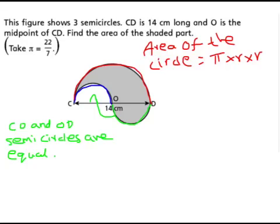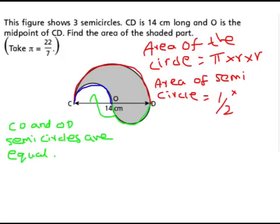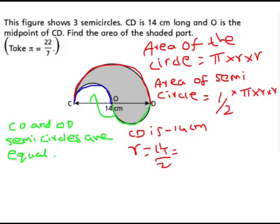So in this sum, CD is 14 centimeters, so r would be 14 divided by 2, which is 7 centimeters. So if you apply this to the formula...